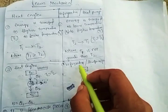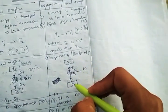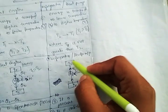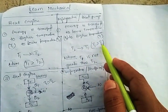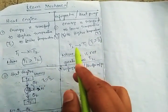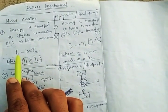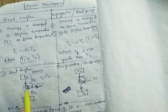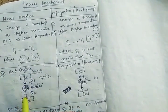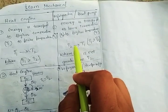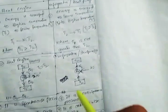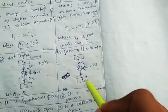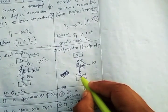Now coming to refrigeration — what is the difference compared to the heat engine? Here, energy is transferred from T2 to T1. T1 is still greater than T2 in both cases, but in the heat engine energy transfers from higher to lower, as shown by the arrows, while in refrigeration energy is transferred from T2 to T1.